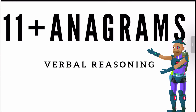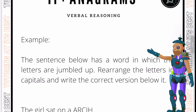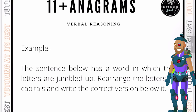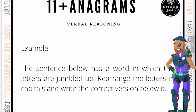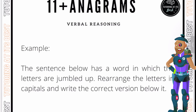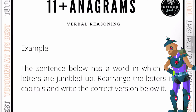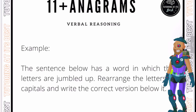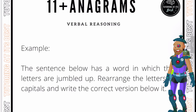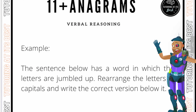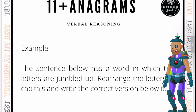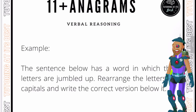So how are anagrams used in the exam? Let's take a look at an example. The sentence below has a word in which the letters are jumbled up — rearrange the letters in capitals and write the correct version below it. Usually there is more than one way that anagrams are used in the exam. Typically they take this form where candidates are given a sentence which contains one word that has been jumbled up and then we need to rearrange them.